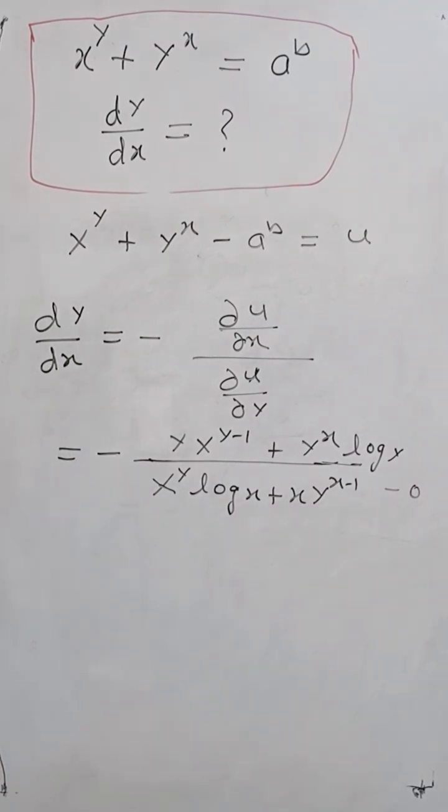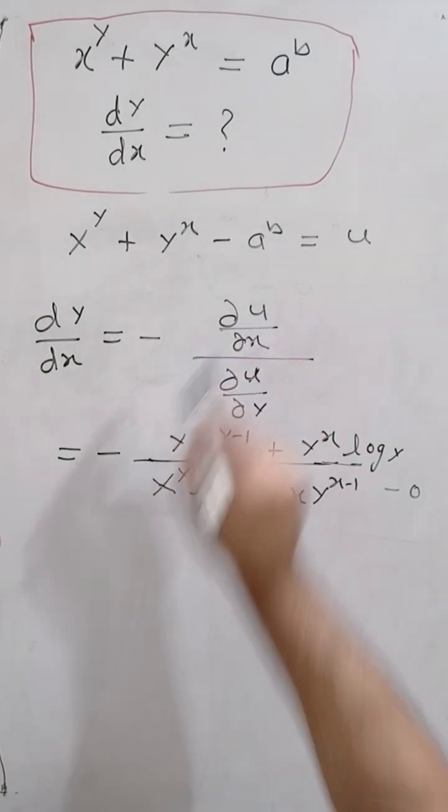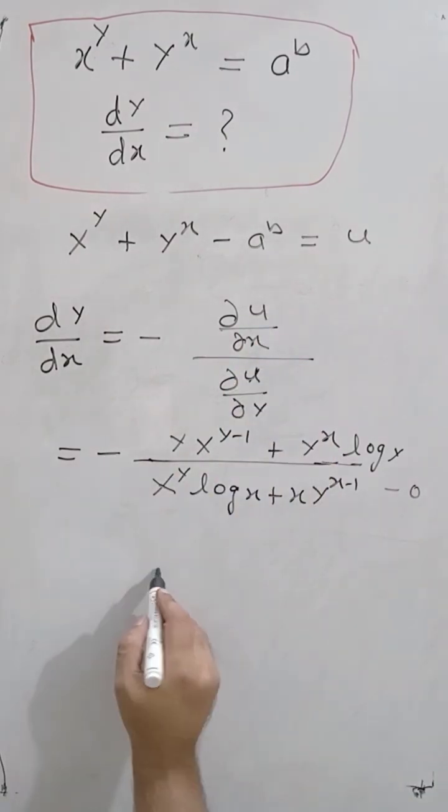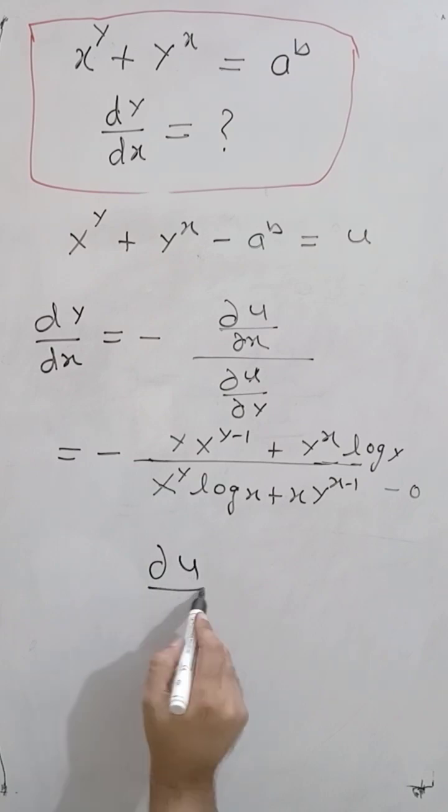I used here the partial differentiation. The term partial differentiation means that when we differentiate anything, del u upon del x means that we will take y as constant and differentiate with respect to x only. So it is the partial differentiation.